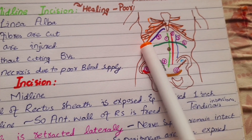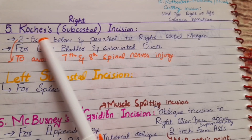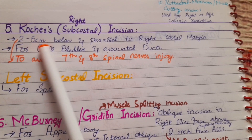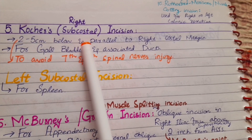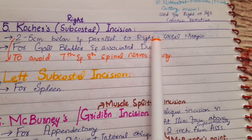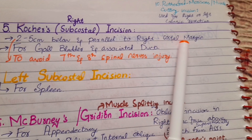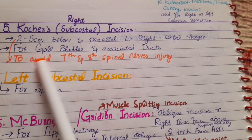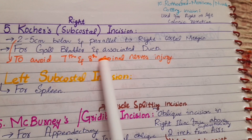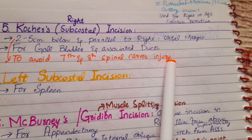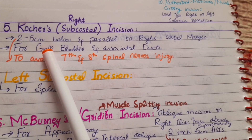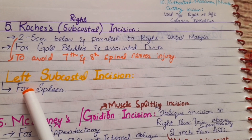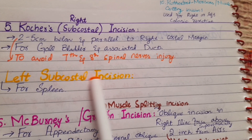Transverse incisions can be done at the level above or below the umbilicus and provide good exposure to the operator. Next we have the Kocher's or subcostal incision, given about two to five centimeters below and parallel to the right costal margin to avoid injury to the seventh and eighth spinal nerves. It is mostly done for exposure of the gallbladder and associated ducts. A left subcostal incision is given for exposure or removal of the spleen.